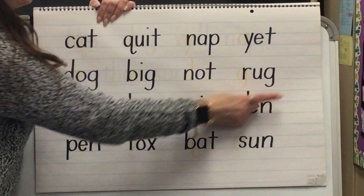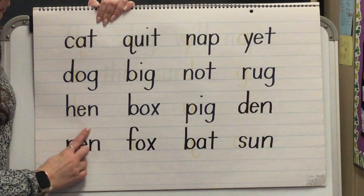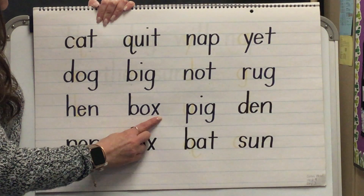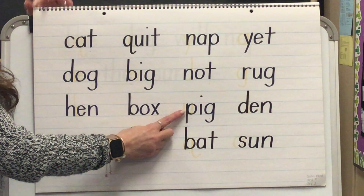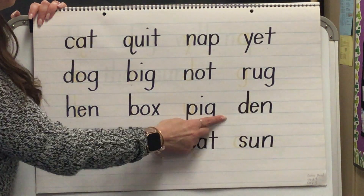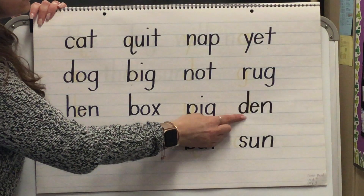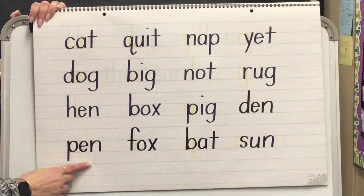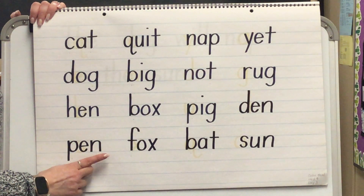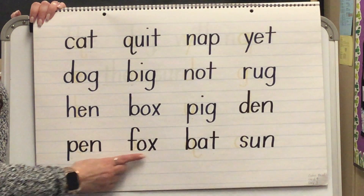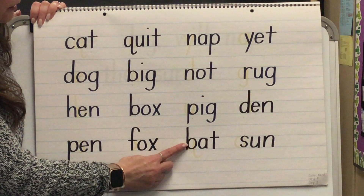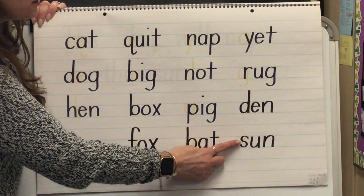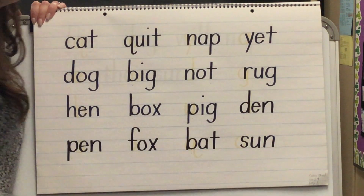Word — yes, rug. Blend. Word — yes, hen. Blend. Word — yes, box. Blend. Word — yes, pig. Blend. Word — yes, den. Blend. Word — yes, pen. Blend. Word — yes, fox. Blend. Word — yes, bat. Blend. Word — yes, son. Blend.